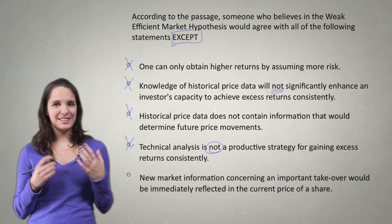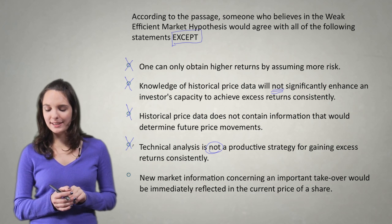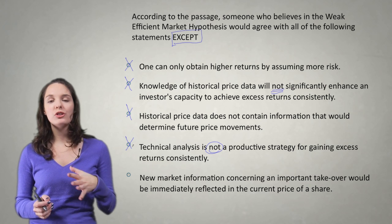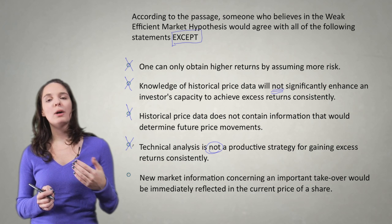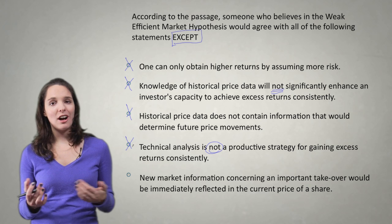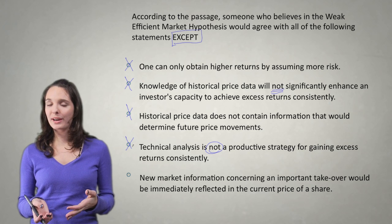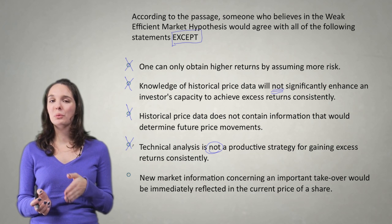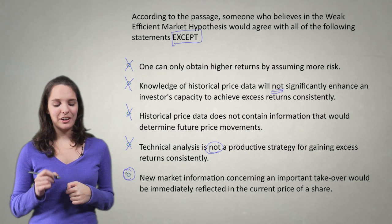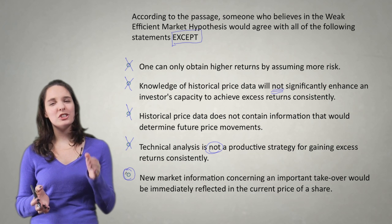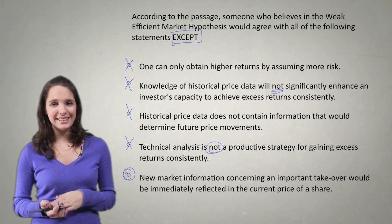Let's look at answer choice E: 'New market information concerning an important takeover would be immediately reflected in the current price of a share.' Now we're talking about new market information — and this example of an important takeover was even given in the passage. But where did it talk about market information and takeovers? In the semi-strong EMH section. Answer choice E is something that believers in semi-strong EMH would agree with, not weak EMH. Believers in weak EMH would not agree with this, so answer choice E is our correct answer. If you pay attention to the overall structure, it really narrows down where you need to look to answer the question.